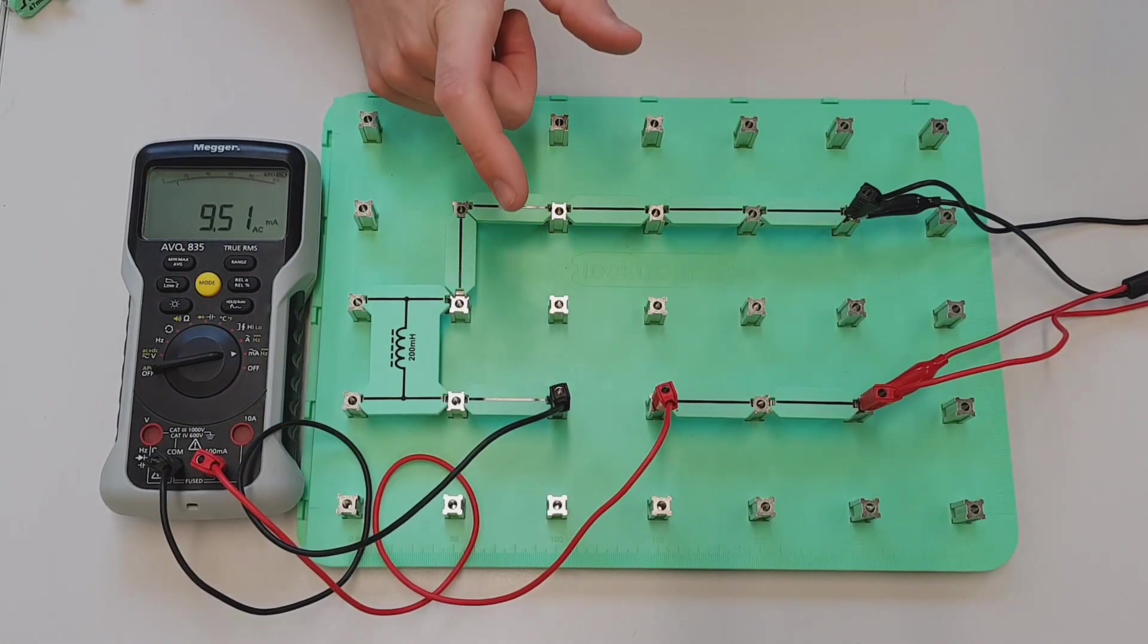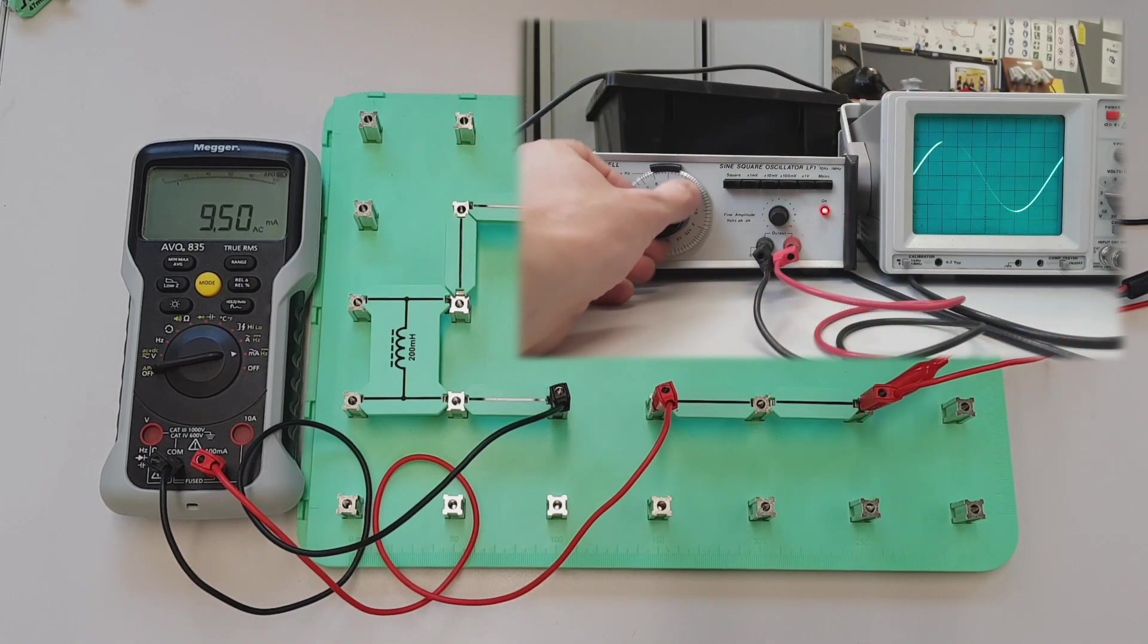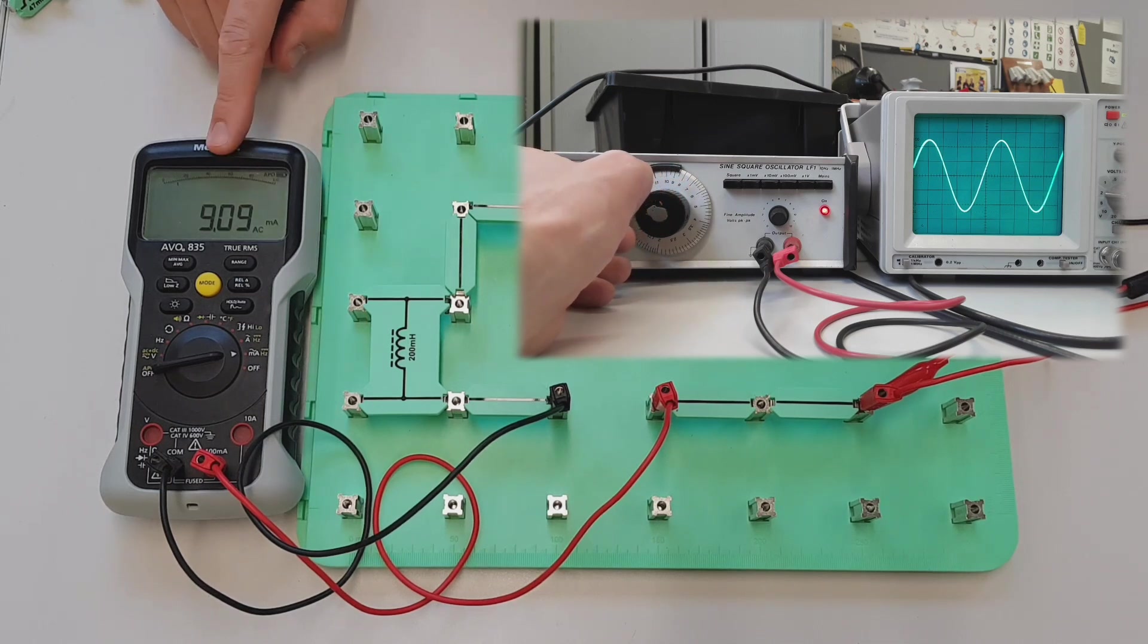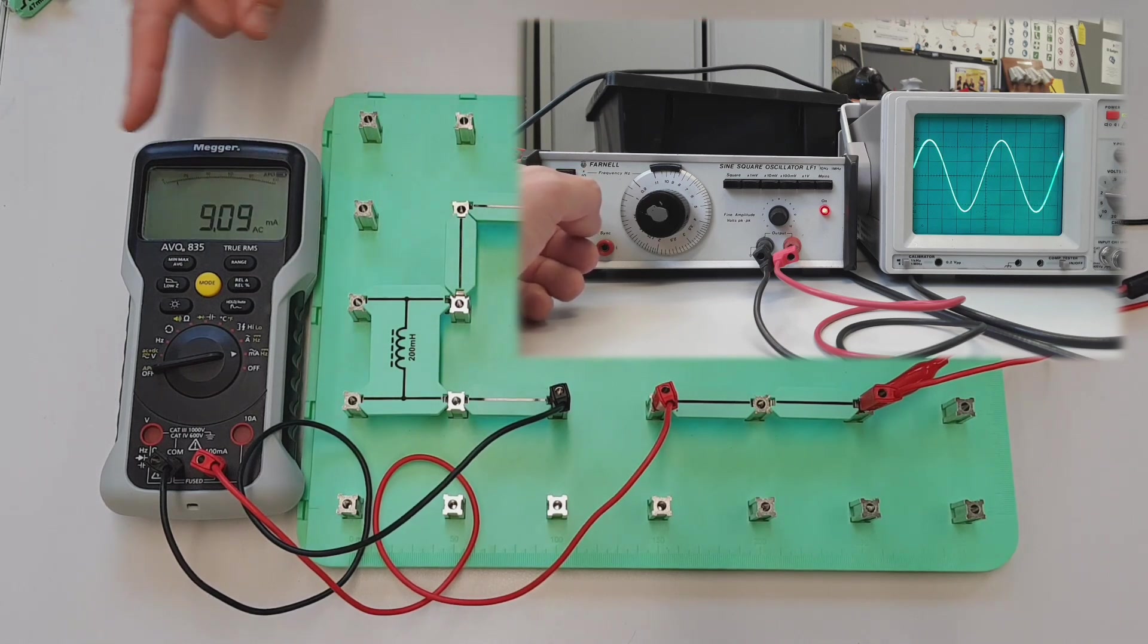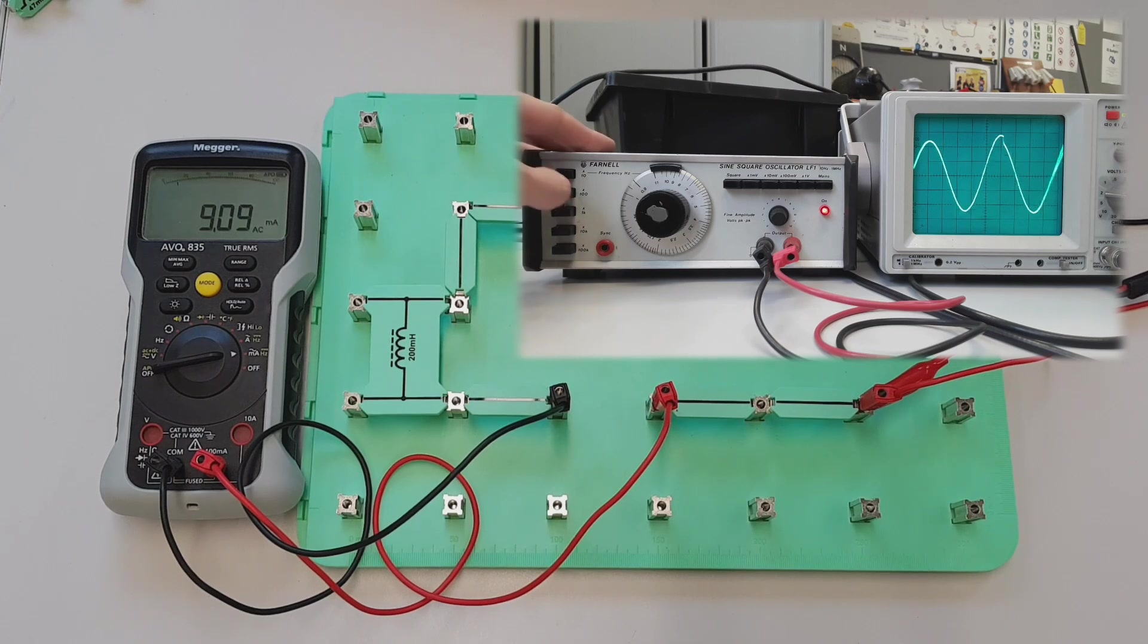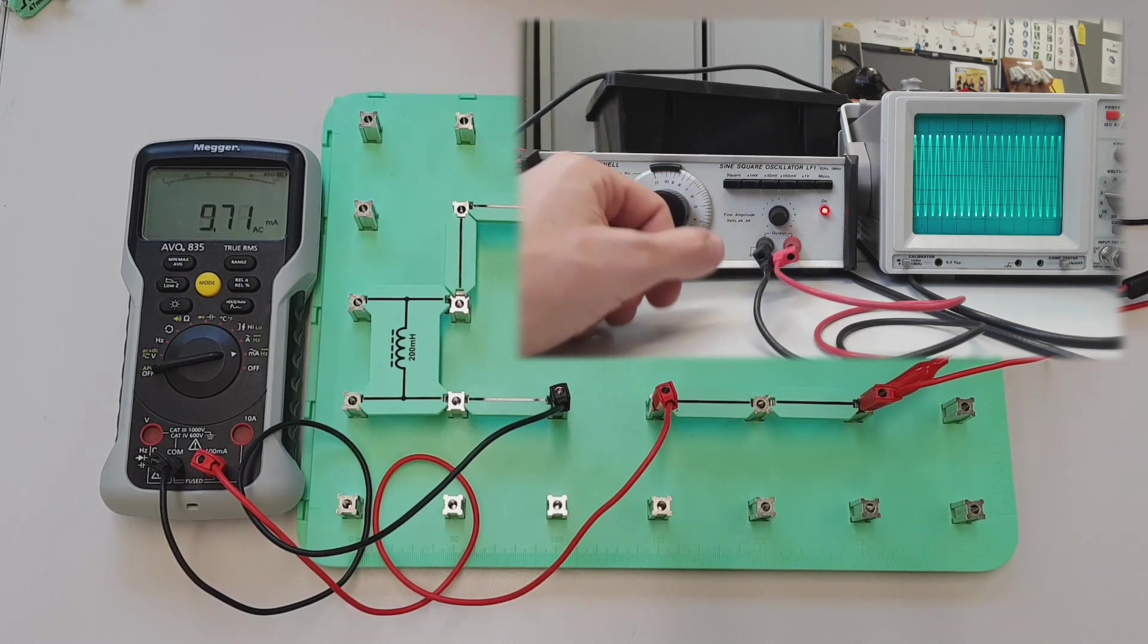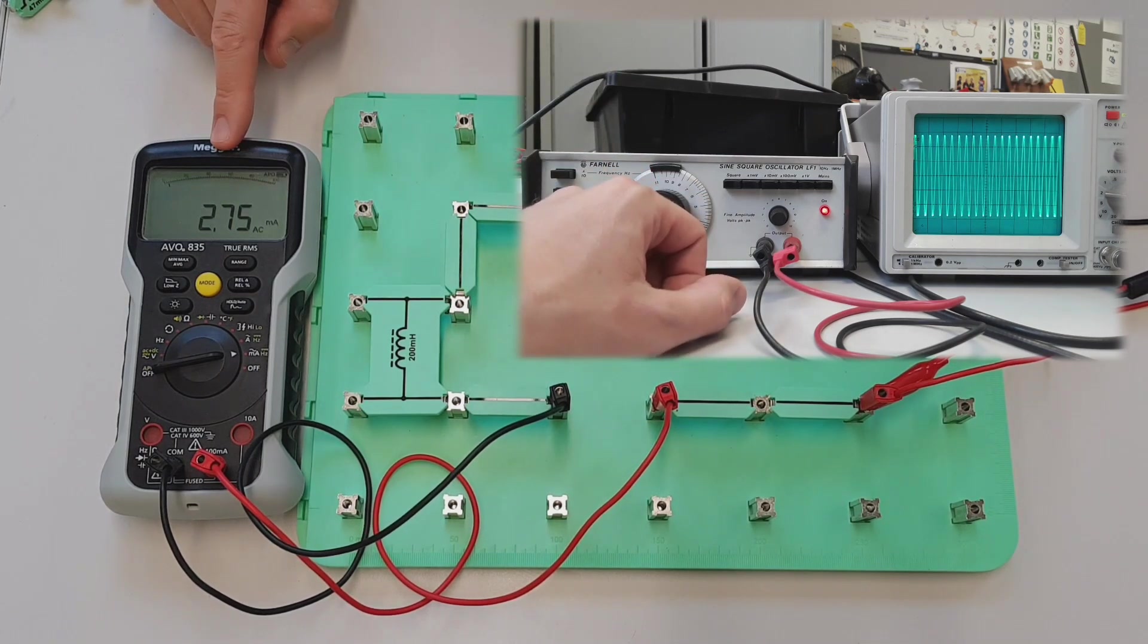And just to reiterate the point again, what's going to happen to the opposition to current flow as we increase the frequency? Let's increase the frequency. Now we're at somewhere around 100 hertz and you can see there that the current flow is just starting to drop down a little bit. As we're increasing frequency we're reducing current, so we must be increasing opposition to current flow. Let's go to a much bigger value, and you can see that once again the current flow has dropped right down again.